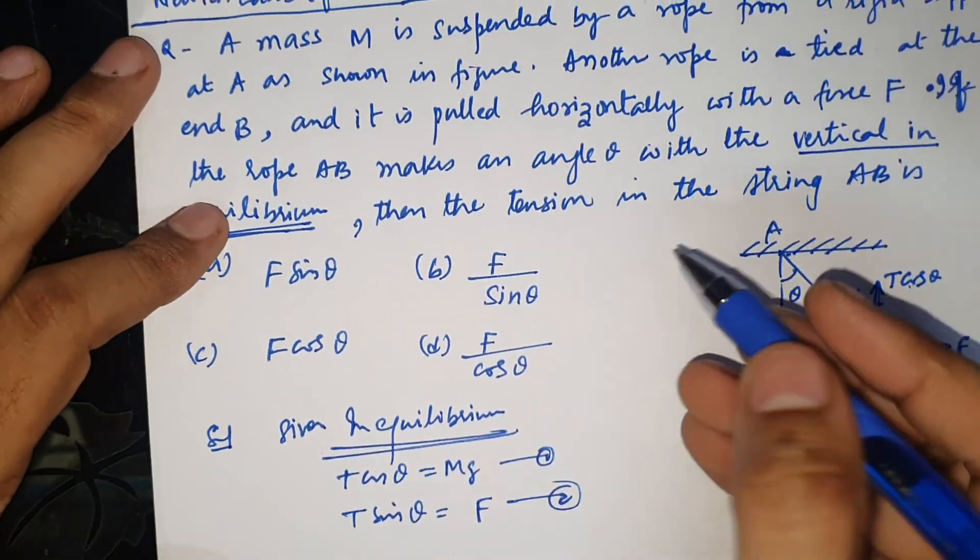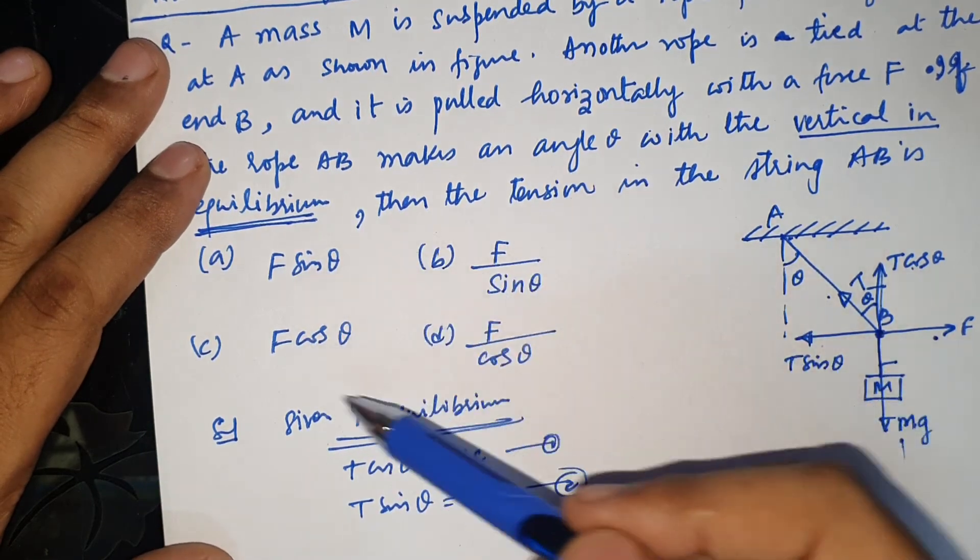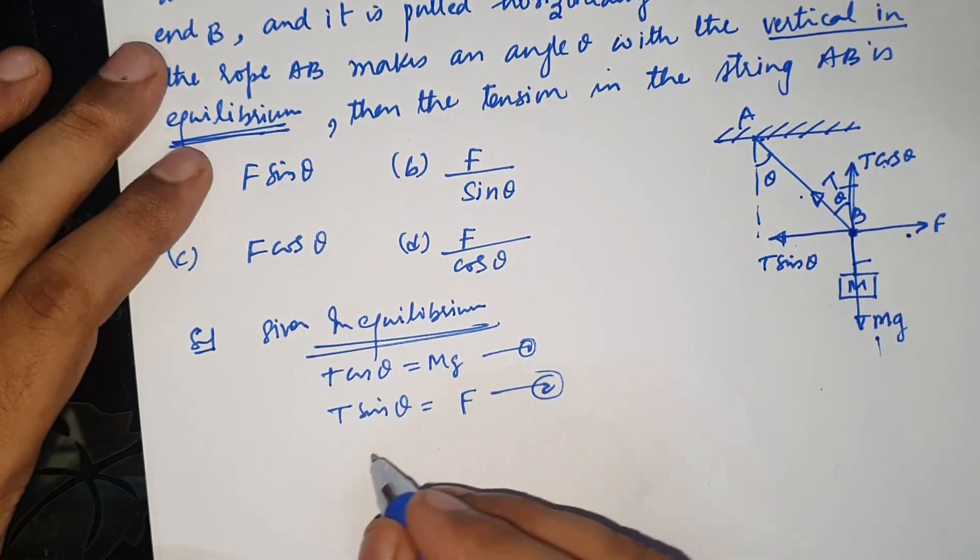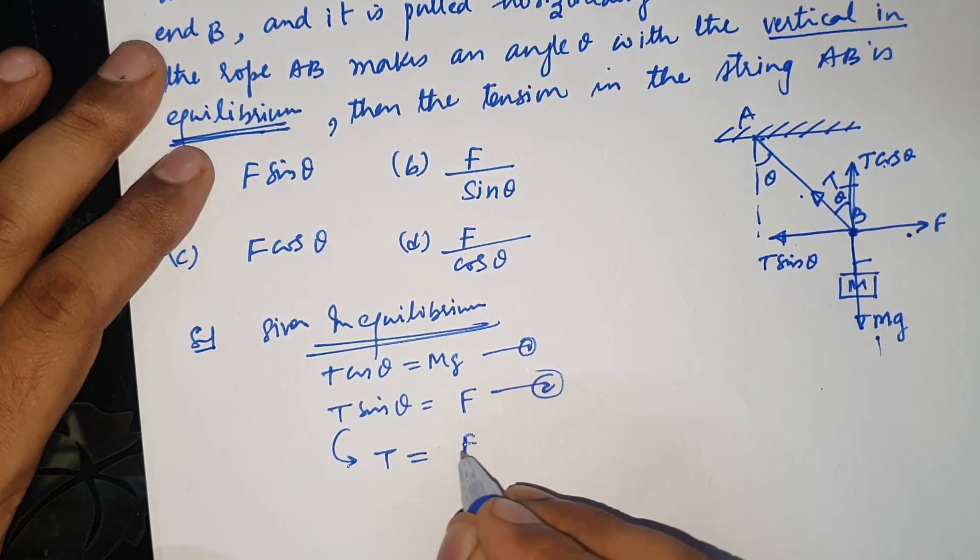Ab humse T ki value poochh raha hai, tension in the string AB. Dekho choices diye rakhe hai na, F aur iske terms mein rakhe hai. Toh issi liye seedha seedha khatam ho gaya - isi equation se T = F upon sin theta.